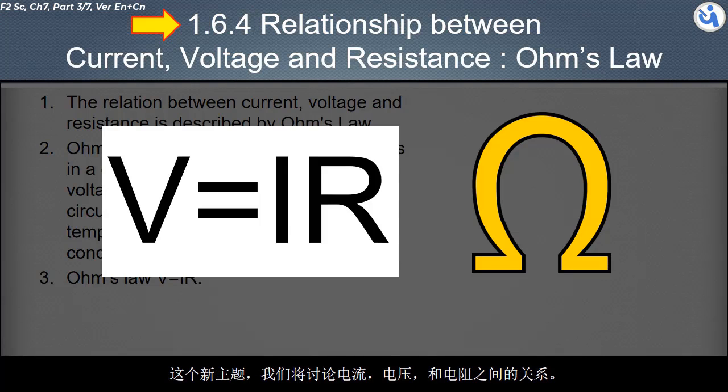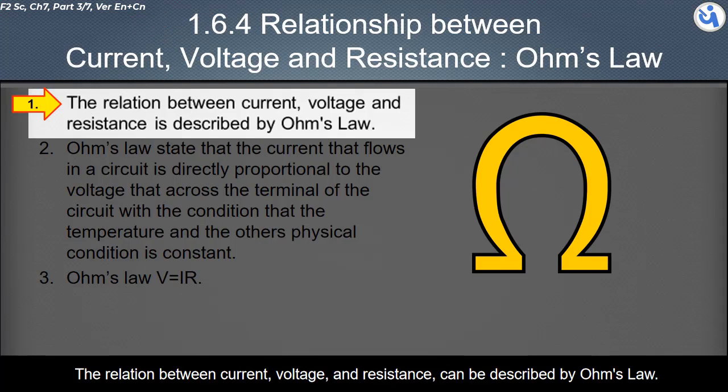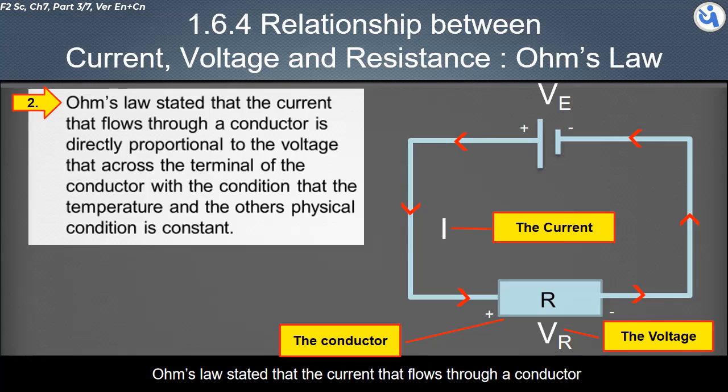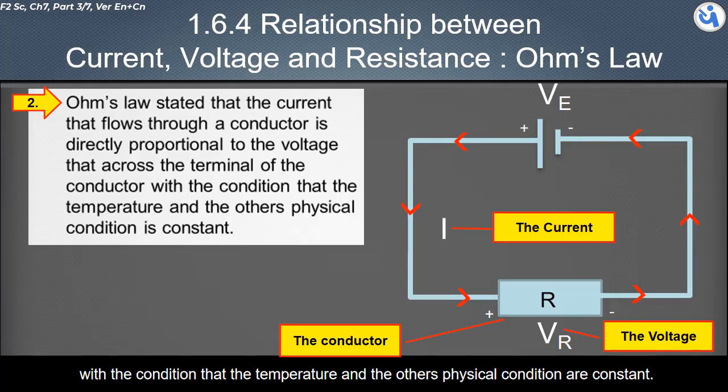This new topic, we will discuss the relationship between current, voltage, and resistance. Their relationship can be described by Ohm's law. Ohm's law states that the current that flows through a conductor is directly proportional to the voltage across the terminal of the conductor with the condition that the temperature and other physical conditions are constant.